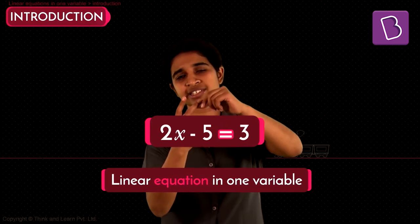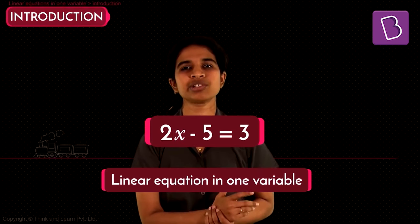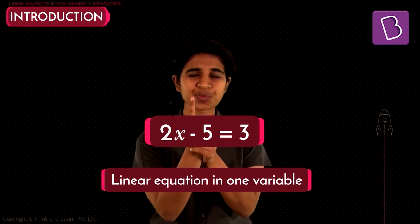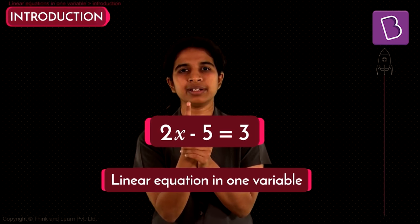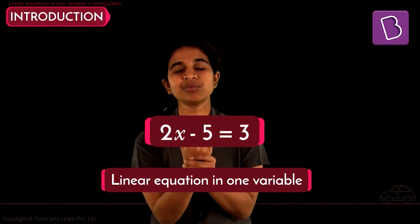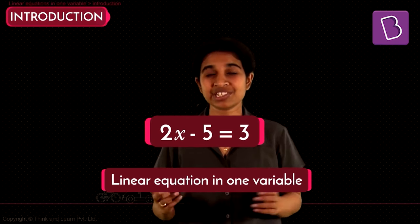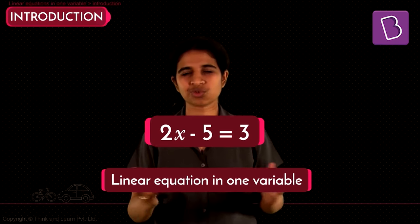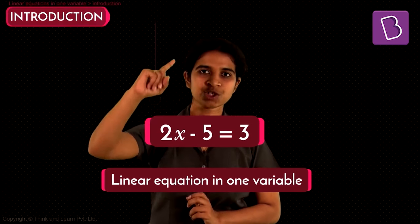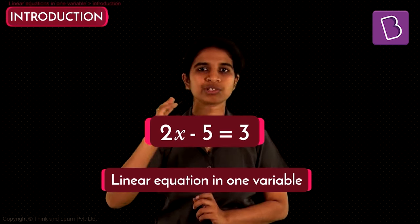2x − 5 = 3 is a linear equation in one variable — it satisfies all three conditions: it is an equation, it is linear, and it has only one variable. The highest power of the variable is 1. Why do we call it 'linear'? Because when you visualize these expressions, they form straight lines — which is why we call them linear, like a line.